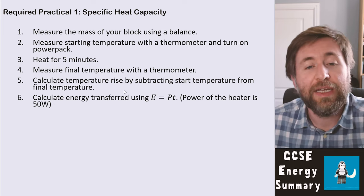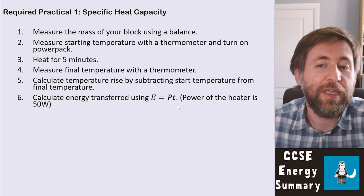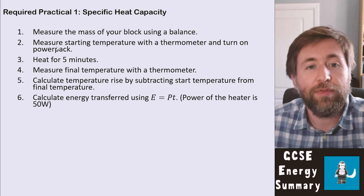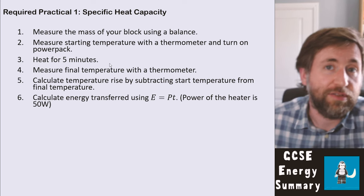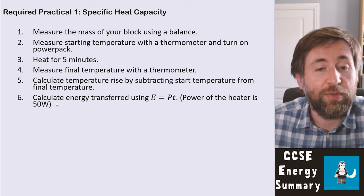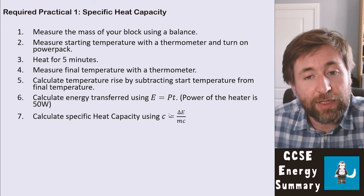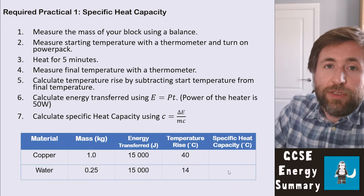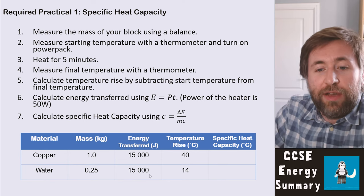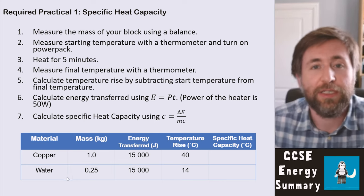Calculate the energy transfer using E = power × time. Most lab heaters are 50 W, so five minutes (300 seconds) × 50 W gives you the energy transferred. Then calculate the specific heat capacity using the equation. Example results show that water has a smaller temperature rise than copper for the same energy, because water has a higher specific heat capacity.